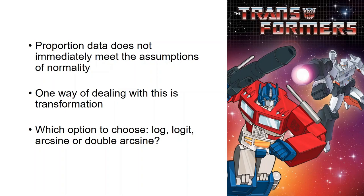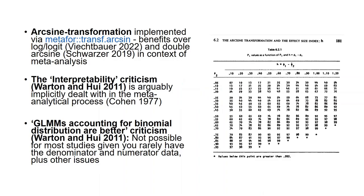And there are many options for transformation, including log, logit, arcsine, and double arcsine transformations. And there's a lot of chatter about the relative merits of these different types, and it's often confusing to the meta-analyst which type is the best to use in their case. So which one did I use? Well, I used the arcsine transformation, and I implemented this transformation using the transf.arcsine function of the metaphor package.